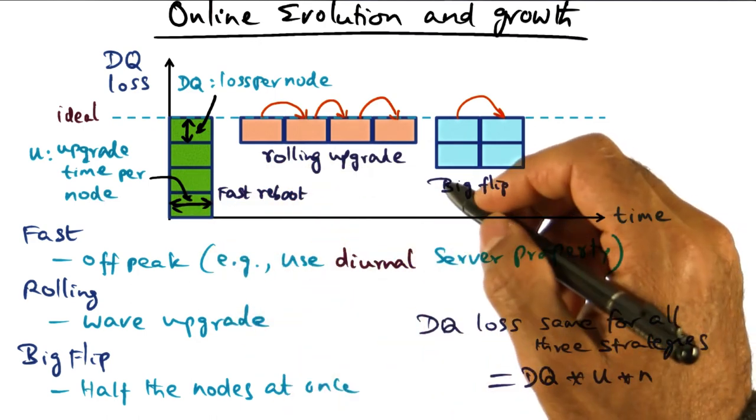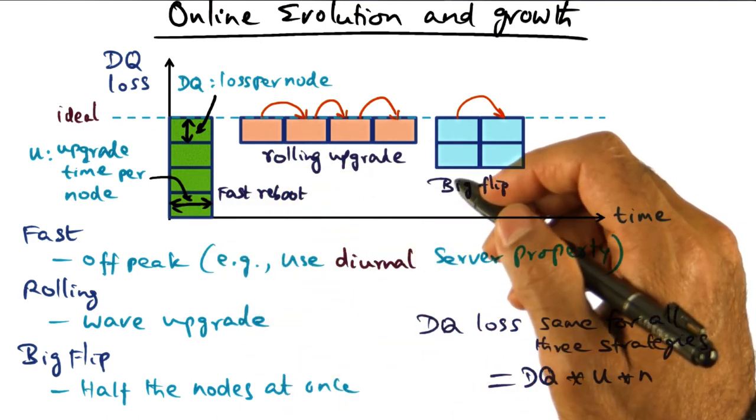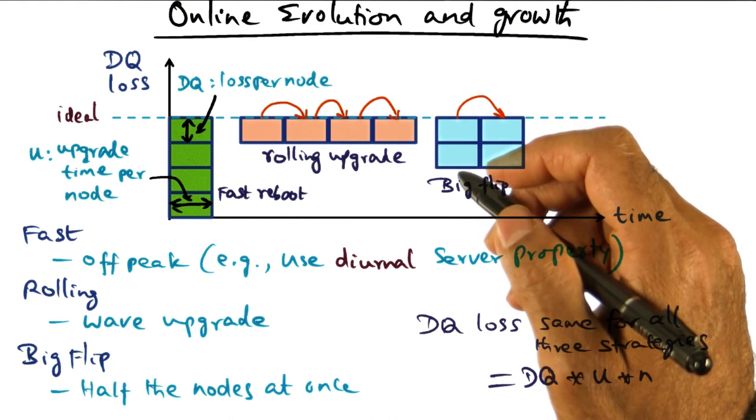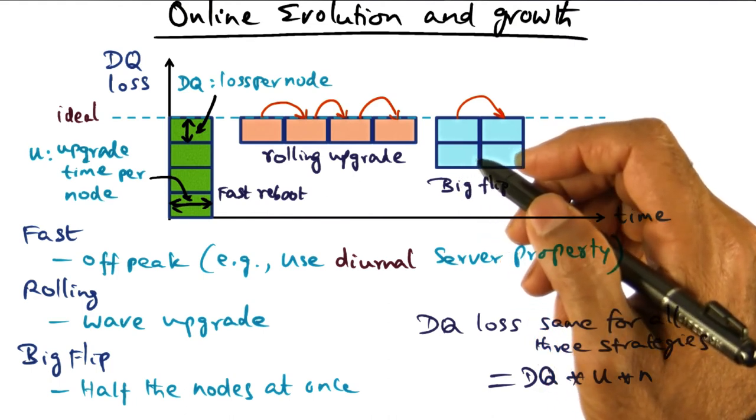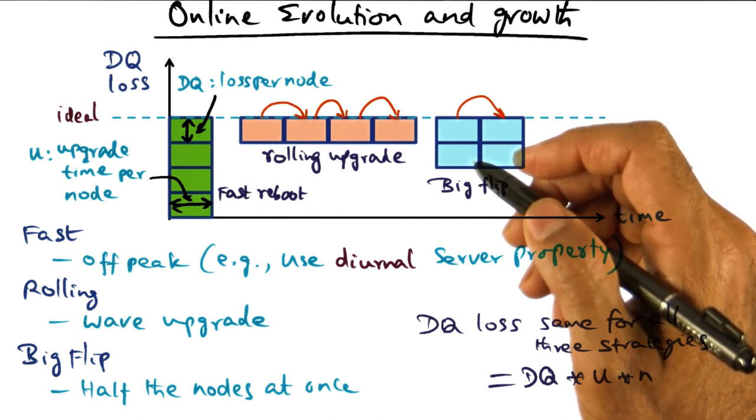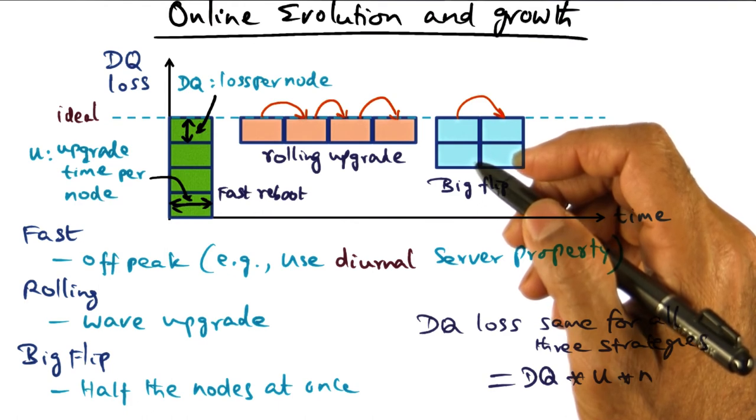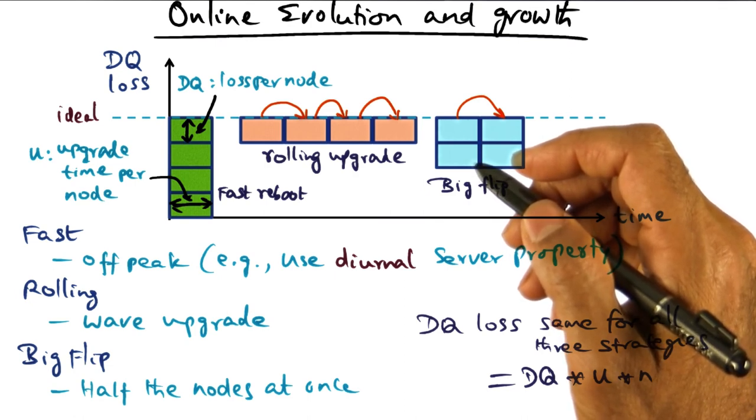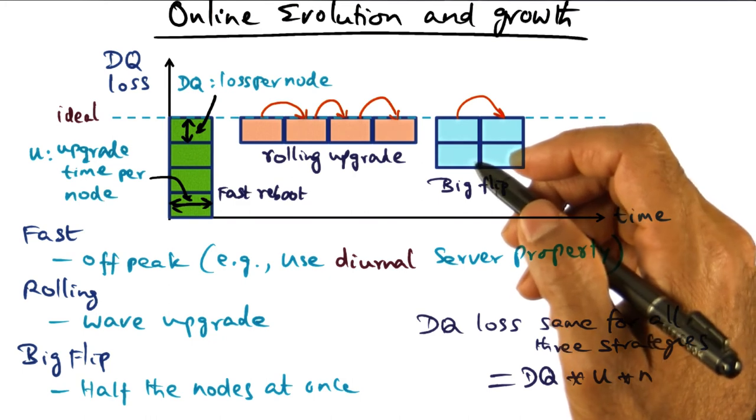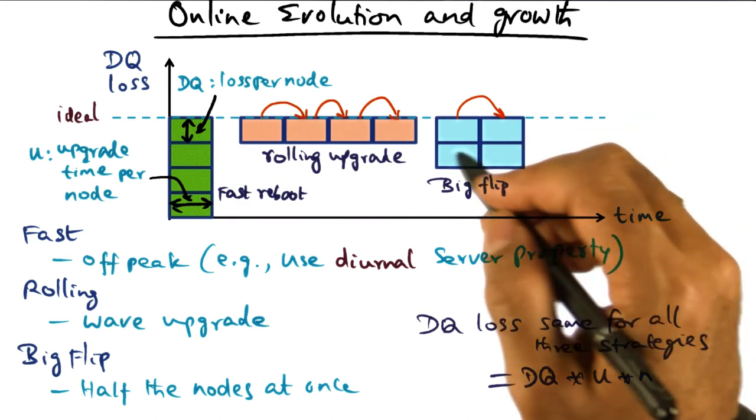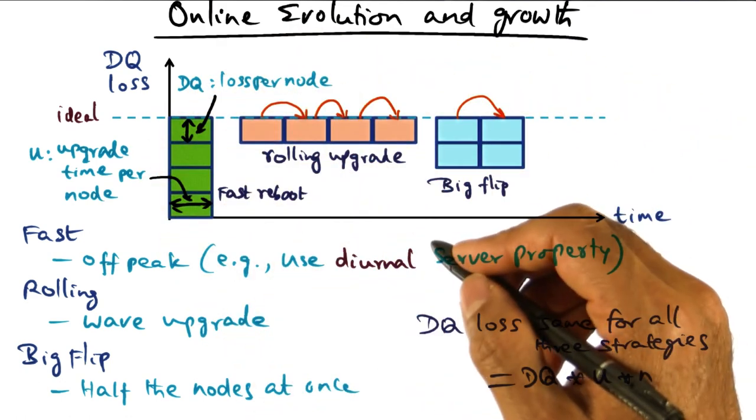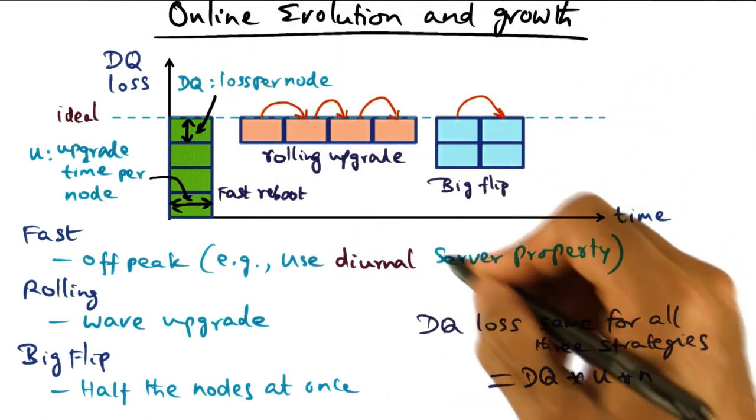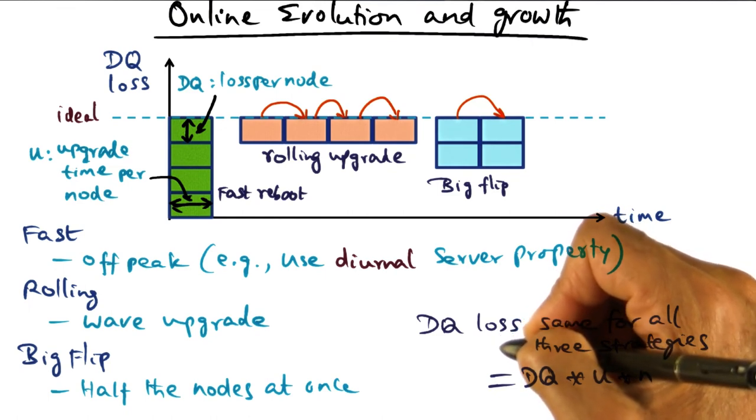So what we have seen through this concept of DQ is a way by which a system developer and a system administrator can work together in figuring out how to architect the system in terms of how the data should be partitioned or replicated and how the system should fine tune the service by looking at the instantaneous offered load and tuning whether to keep the yield the same or the harvest the same, knowing that DQ is a constant and the server is getting saturated. And finally, when service has to evolve, once again, the system administrator can make an informed decision on how to do this online evolution by controlling the DQ loss that is experienced by the user community at any point of time.